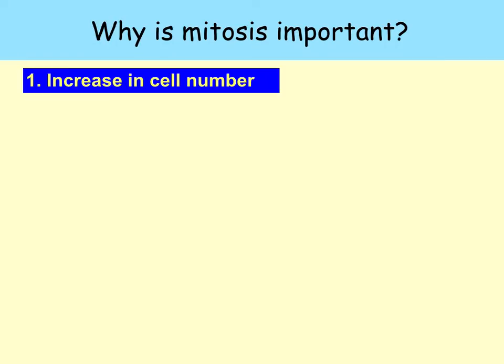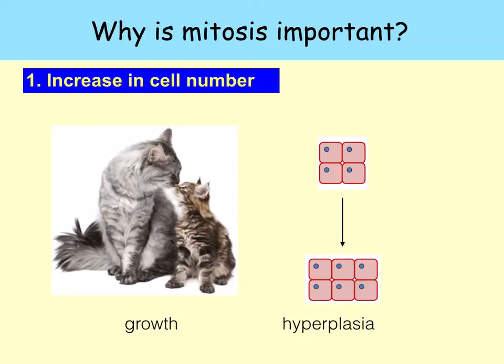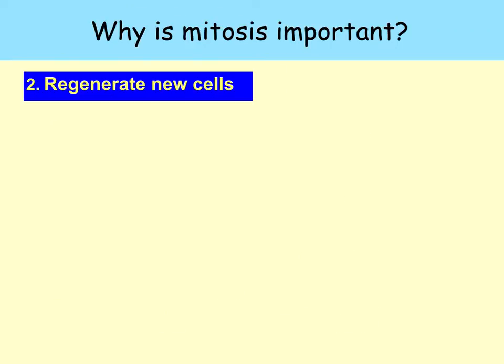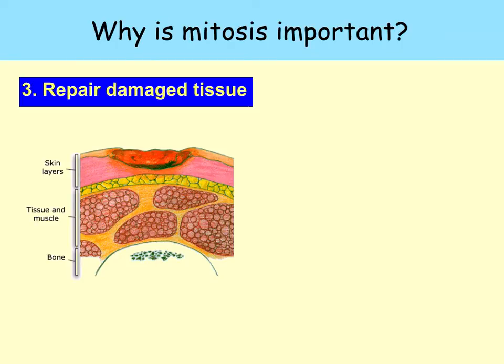Why is mitosis important? It results in the increase in cell number, so it allows for growth of multicellular organisms from unicellular zygotes. This growth can be over the entire body, or hyperplasia, where the cells are multiplying. It's also used in the regeneration of new cells — for example, cell replacement means that some animals, such as planaria, can regenerate parts of their body. Cells are constantly dying and being replaced by identical cells, so in the human body, cell replacement is rapid in the skin and the lining of the gut.